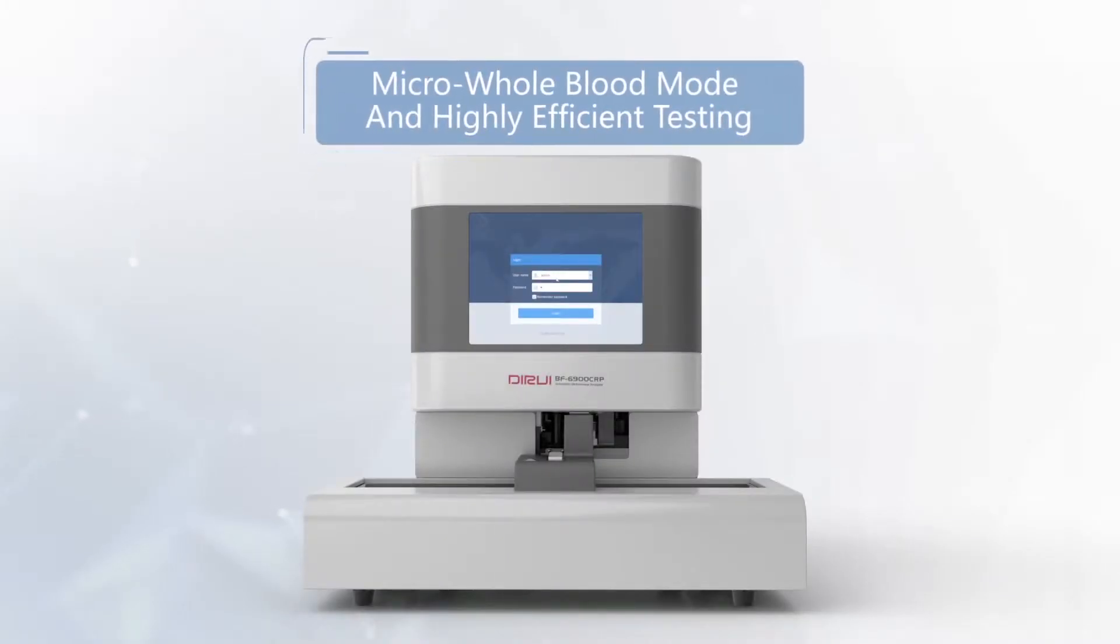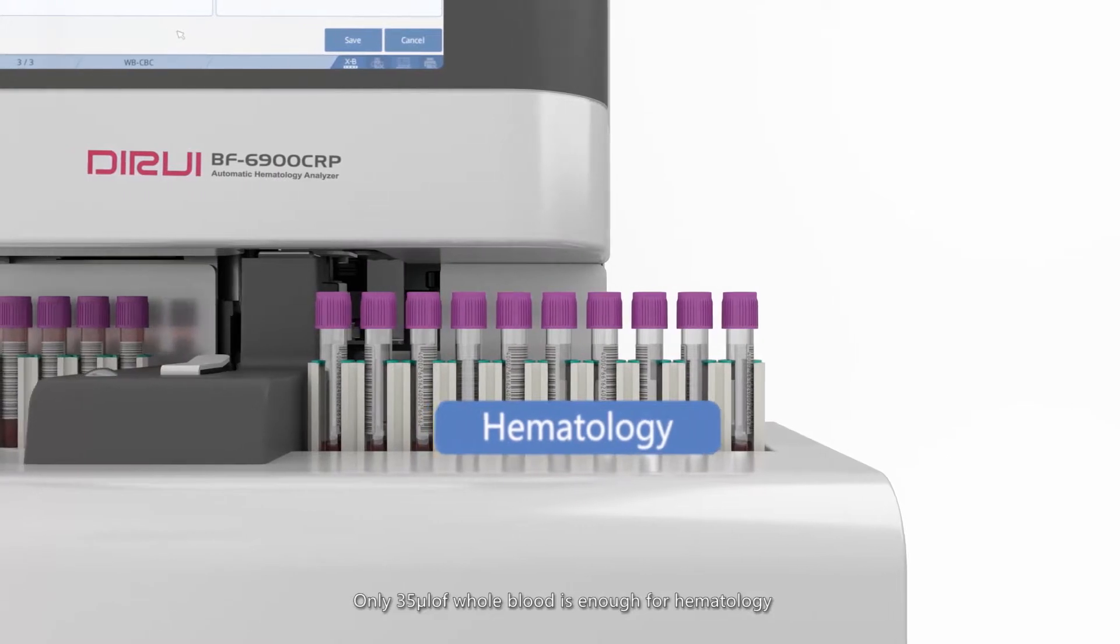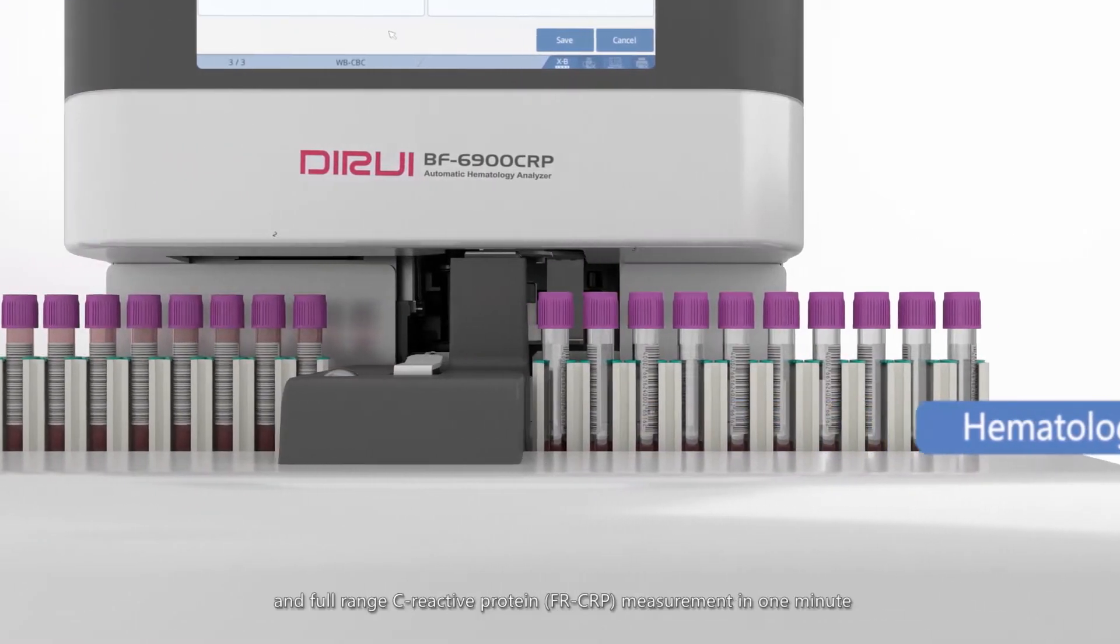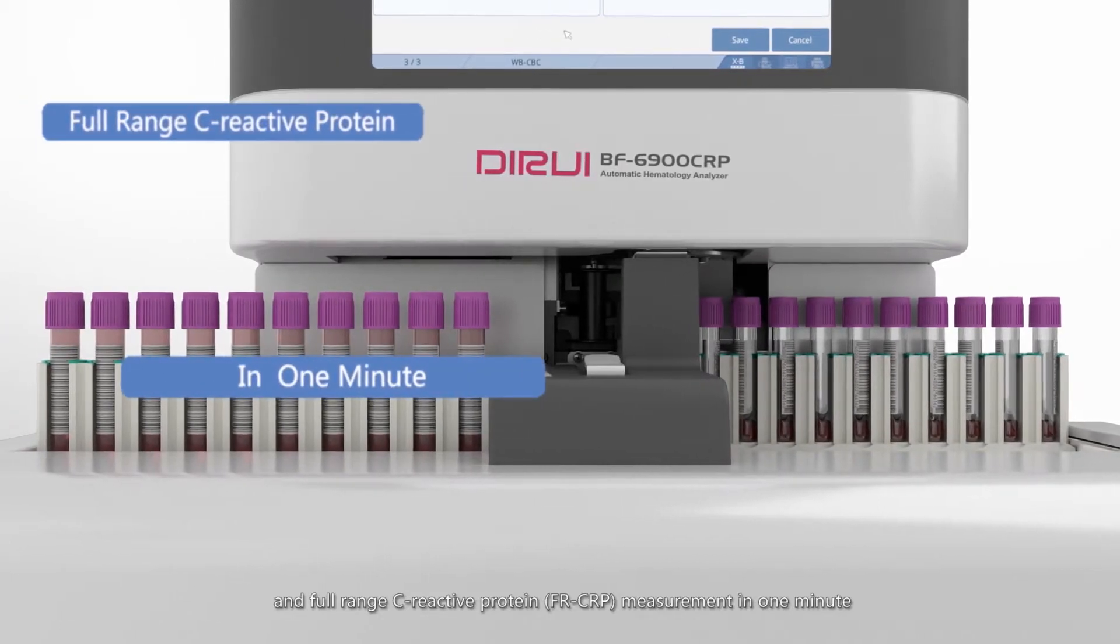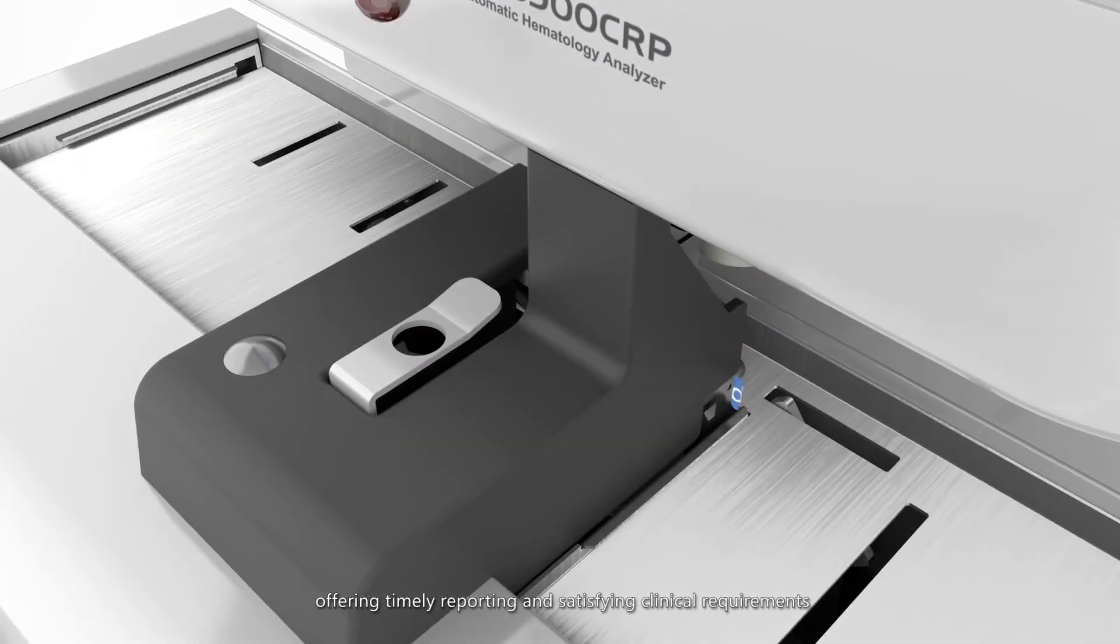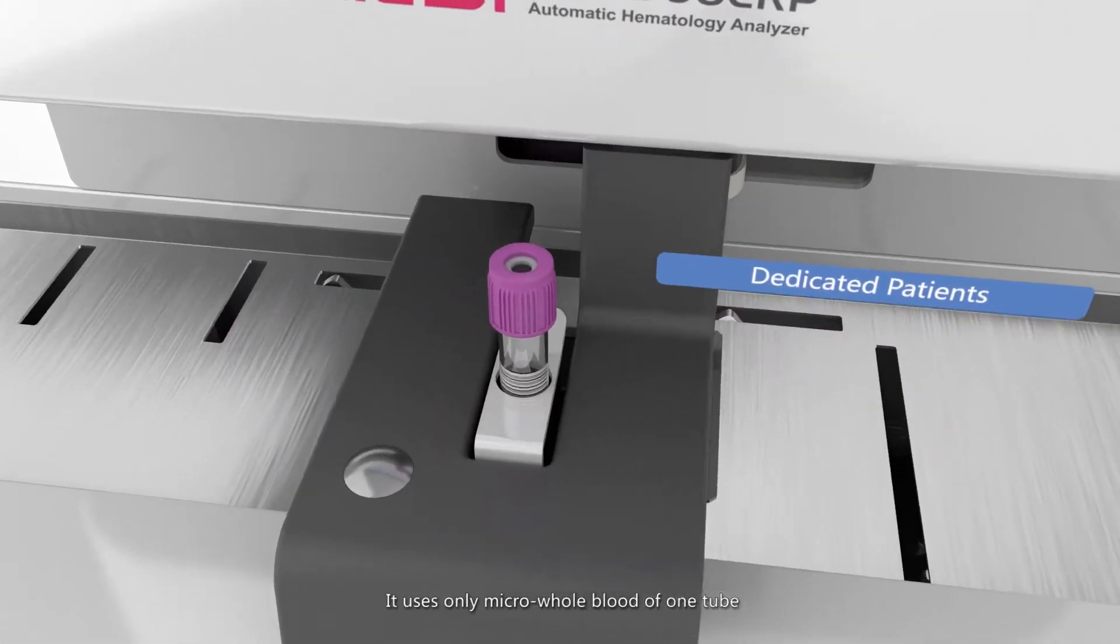Micro whole blood mode and highly efficient testing. Only 35 microliter of whole blood is enough for hematology and full-range C-reactive protein measurement in one minute, offering timely reporting and satisfying clinical requirements. It uses only micro whole blood of one tube.